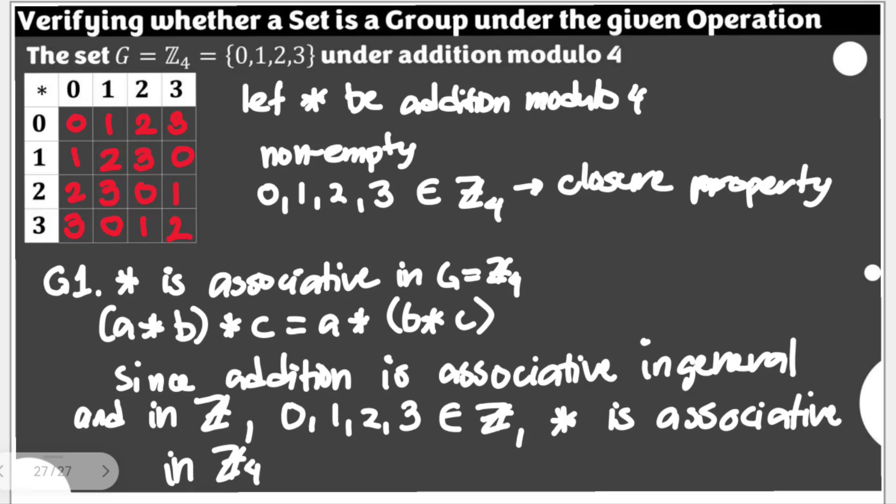Again, since addition is associative in general and in Z, and you have 0, 1, 2, 3 elements of Z, which are also elements of Z sub 4, then we can say star is associative in Z sub 4. We are invoking the associativity of addition in general, especially for our integers. And our elements are also 0, 1, 2, 3 elements of integers, that associativity should also work for addition modulo 4. If that is enough with you, let's proceed now for our G2.